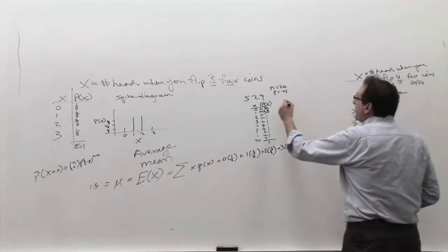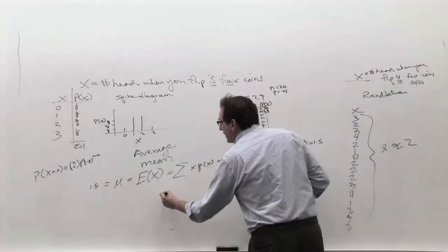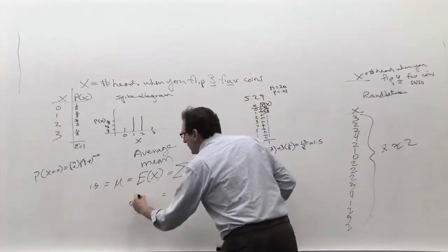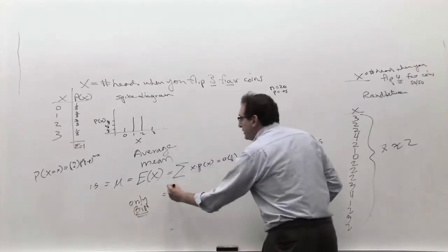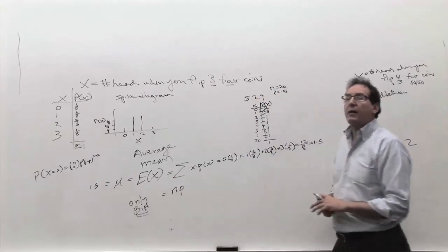So, the formula, the E of X, in the case of the binomial, is only binomial, this is very important. Don't try to apply the shortcut for anything else. It is simply the N times, you can prove it mathematically. Of course, it's N times the P.